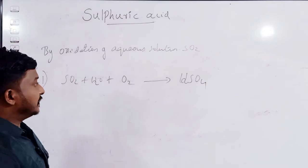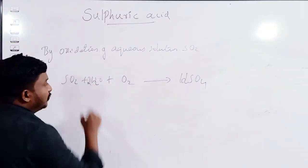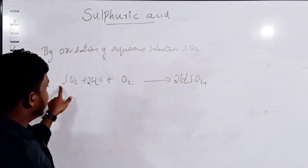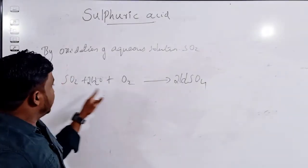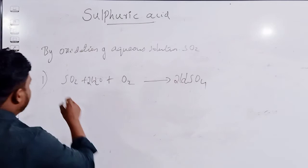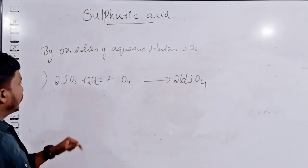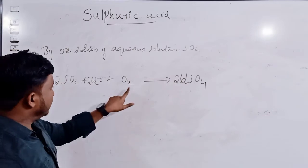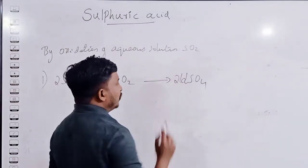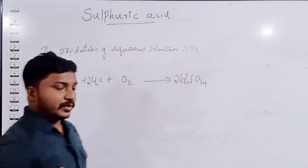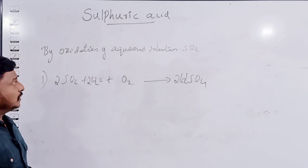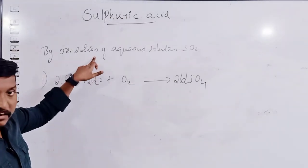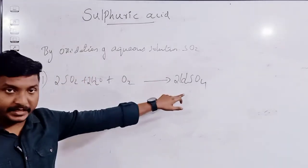We need to balance this equation. Putting 2 in front of SO₂ and 2 in front of H₂SO₄: sulfur is 2 on both sides. Oxygen: 4 + 2 + 1 = checking — 4 × 2 = 8 on the right, balanced on the left as well. Addition of oxygen is known as oxidation, so by oxidation we can prepare sulfuric acid.